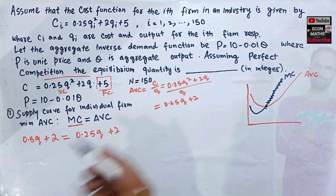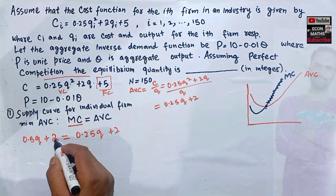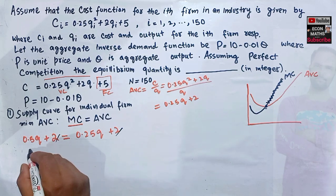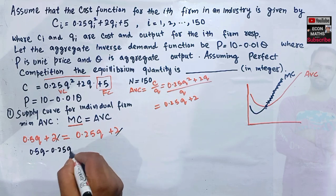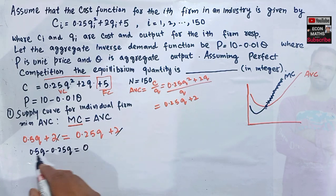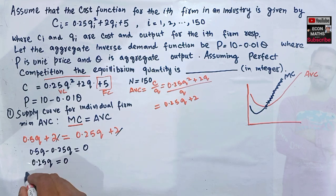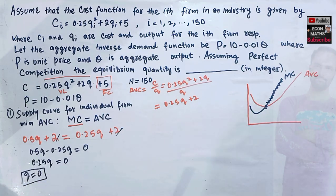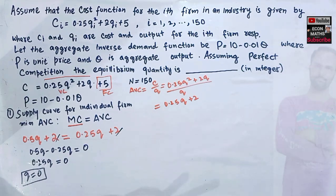Setting MC equal to AVC to find the minimum: 0.5q + 2 = 0.25q + 2. The 2s cancel, giving 0.25q = 0, so q = 0. The minimum point of AVC occurs at q = 0.